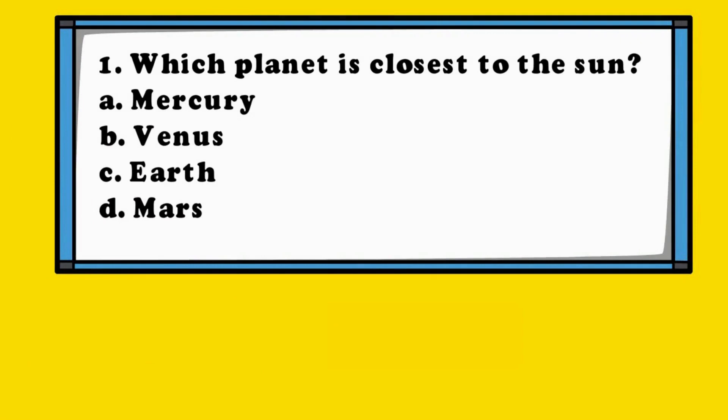Question 1. Which planet is closest to the Sun? A. Mercury, B. Venus, C. Earth, D. Mars.